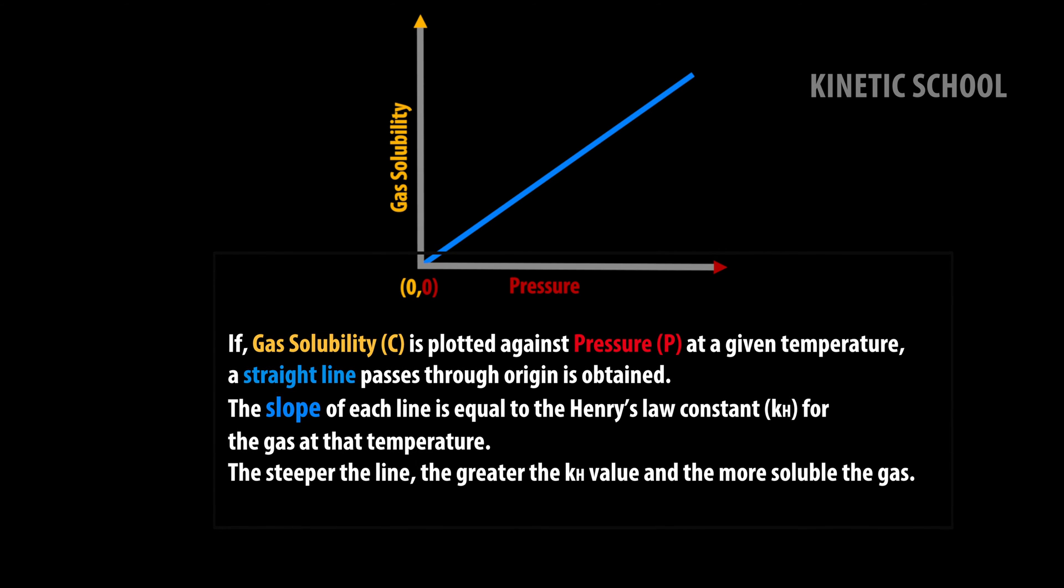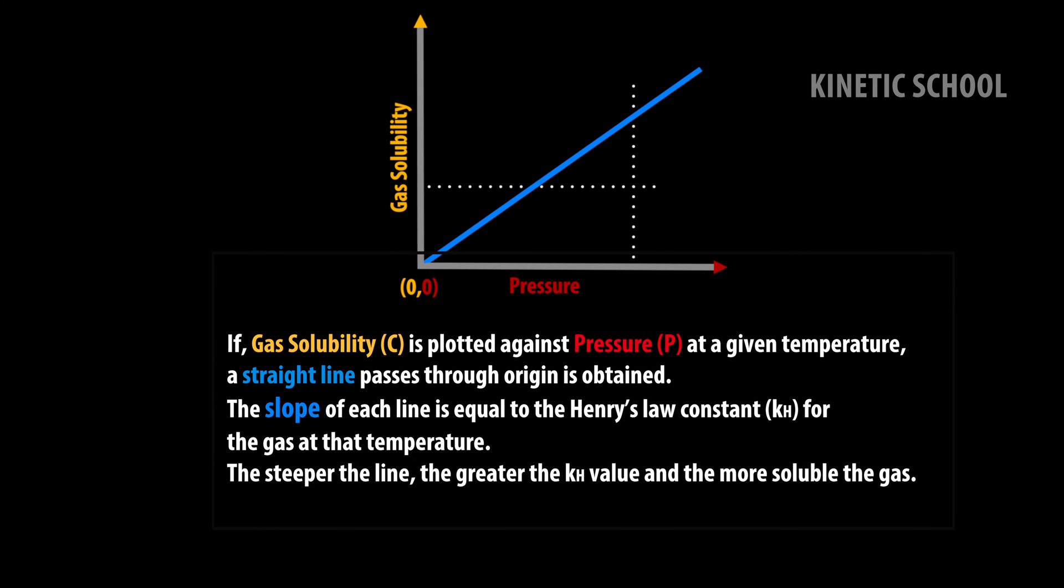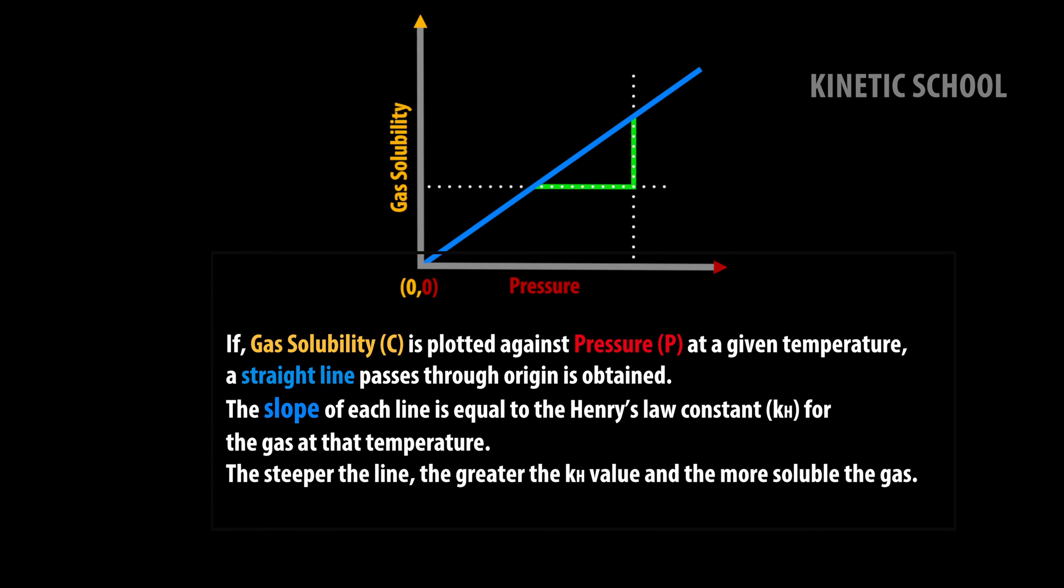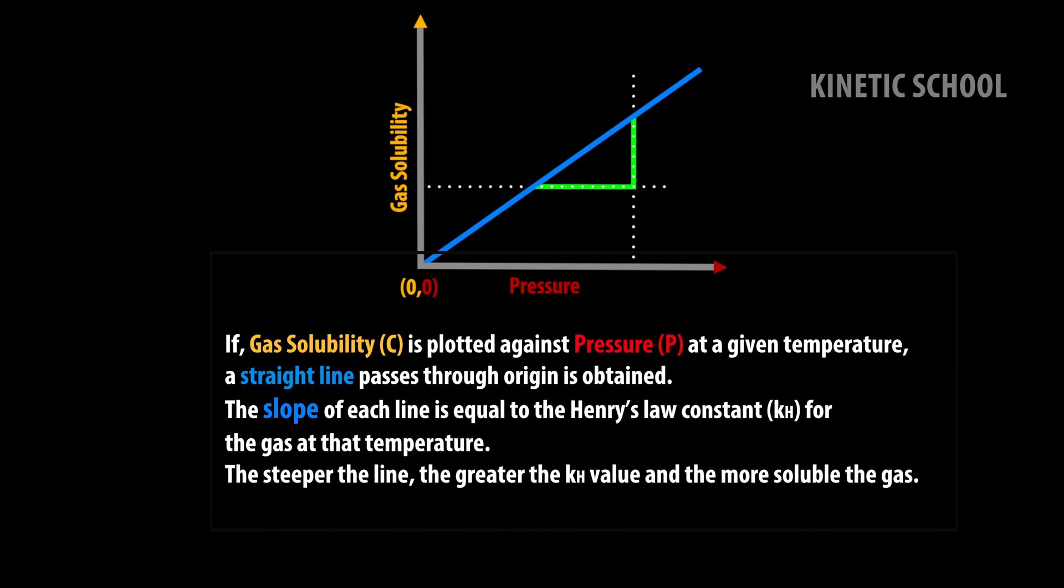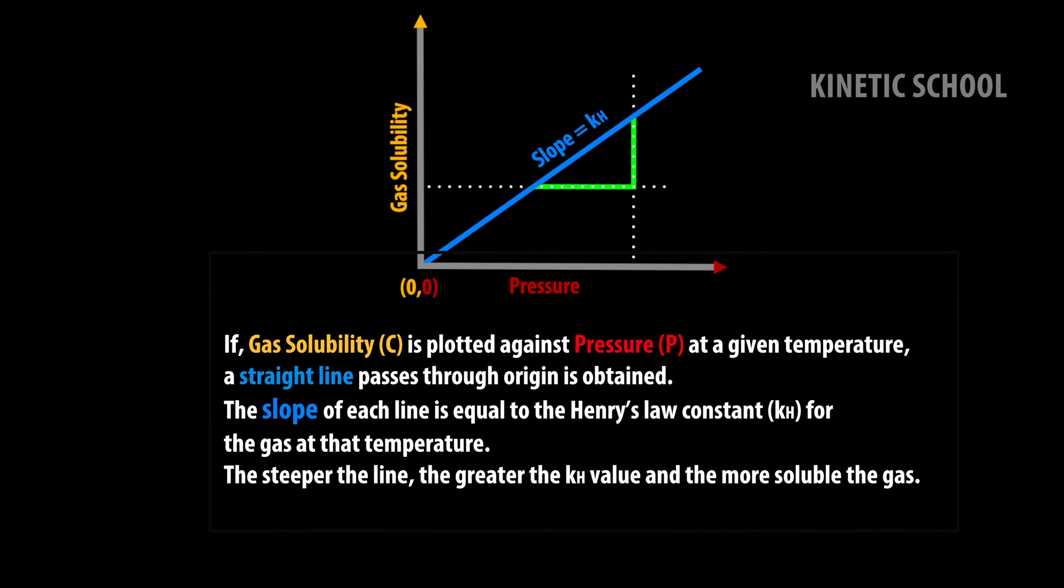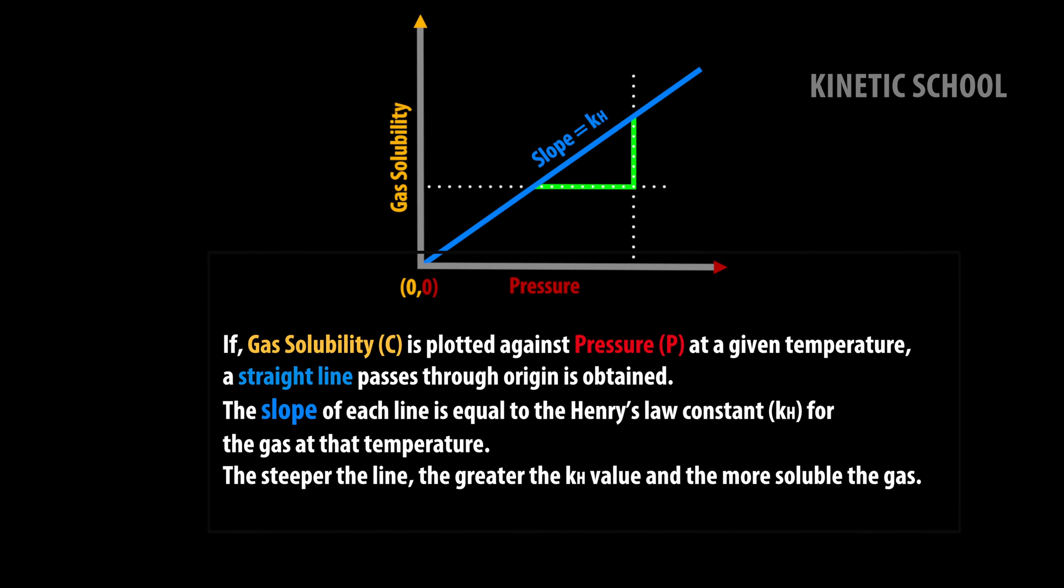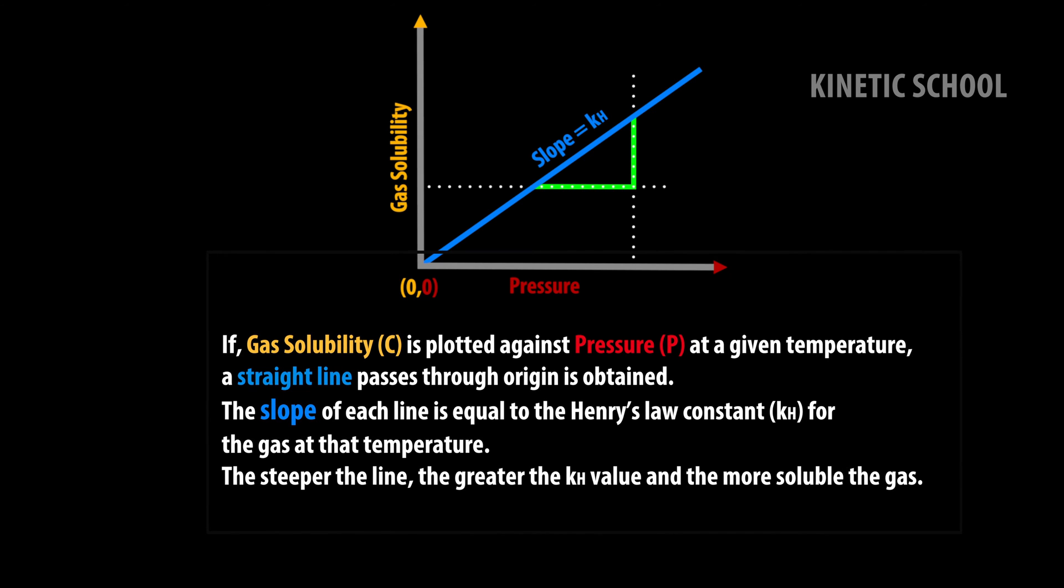If gas solubility is plotted against pressure at a given temperature, a straight line passes through origin is obtained. The slope of each line is equal to the Henry's law constant for the gas at that temperature.